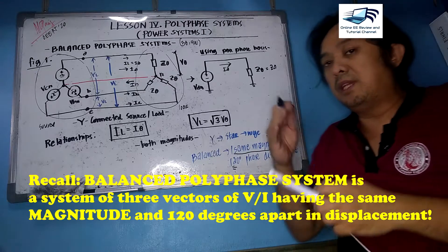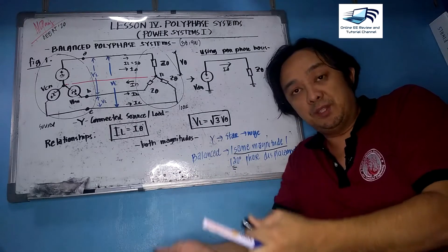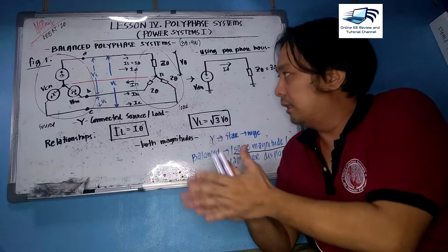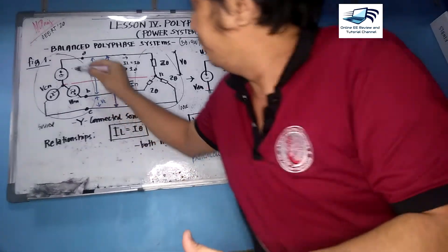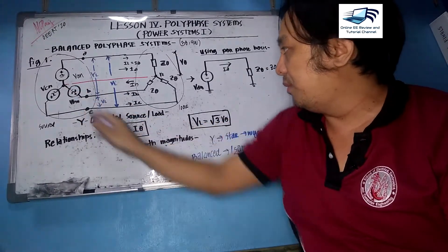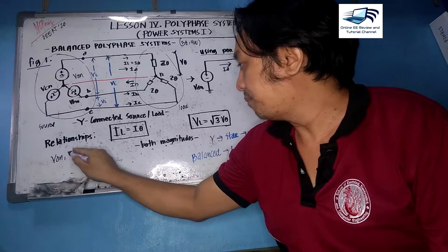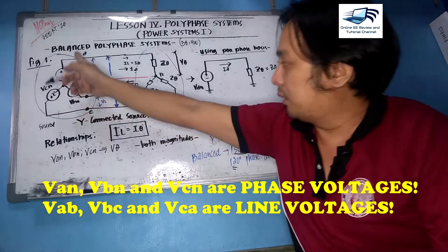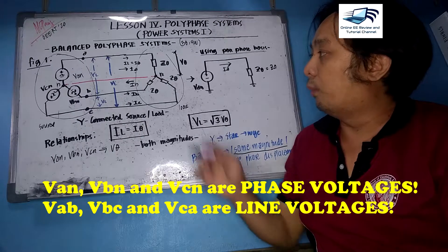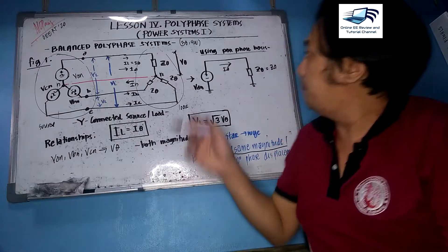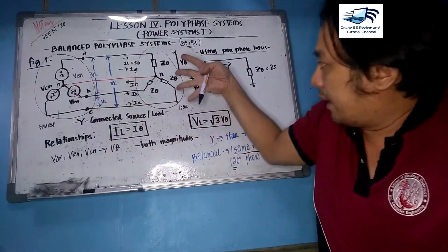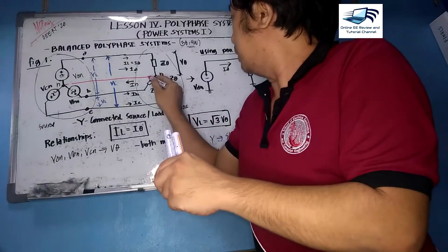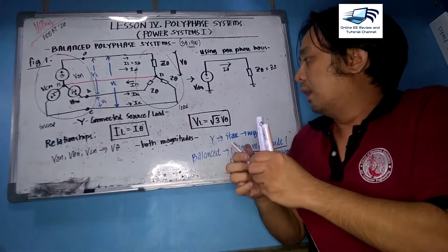Whatever happens, they have the same magnitude, 120 degrees apart in phase displacement. Here we have a Y-to-Y connected source and load. Our first discussion is on Y-connected systems. We have phase voltages VAN, VBN, and VCN — the voltages connected up to the neutral point N. This system is a three-phase four-wire system, meaning you have a three-phase source and four wires, with the fourth wire being the neutral wire. The neutral current is assumed to flow back to the source.